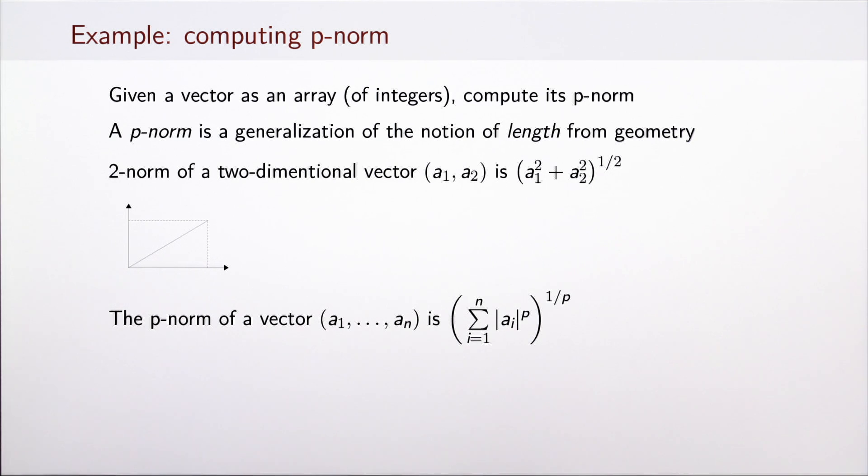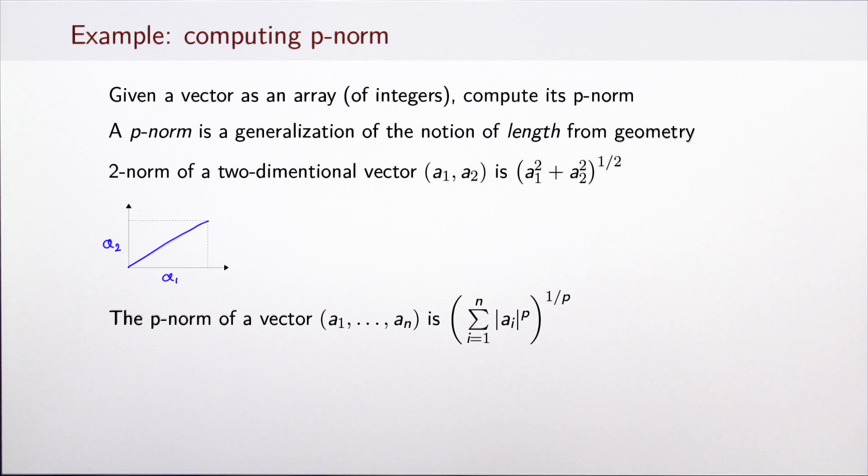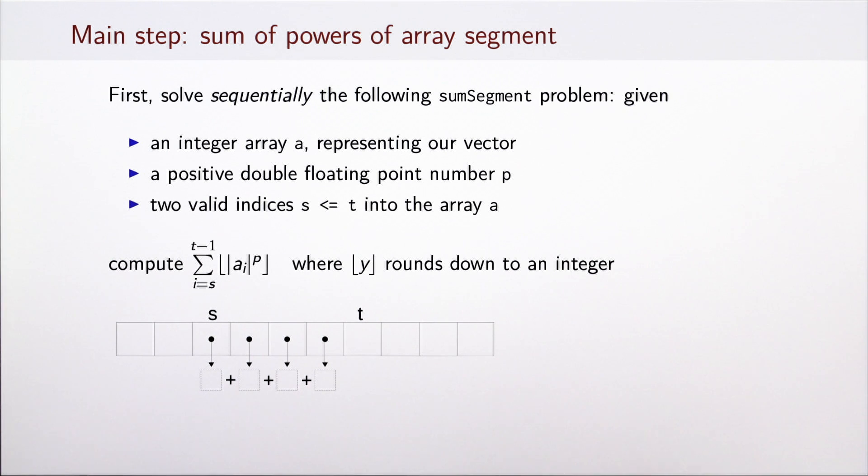To understand how to use this construct, let's look at an example of computing a p-norm. P-norm is a generalization of the notion of length of a vector in geometry. When p is equal to 2, 2-norm would be simply the length of a vector given by its coordinates. We compute it by summing up the squares of the coordinates and then raising the result to the power of 1/2, square root. For arbitrary p, we simply take the sum of the absolute values of the coordinates raised to the power p, and then raise the resulting sum to the power 1 over p.